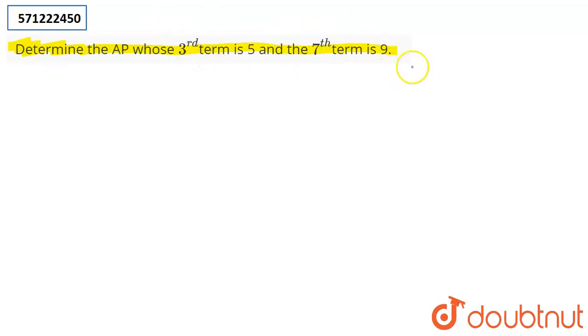In general, an AP looks like a, a+d, a+2d, where a is the first term and d is the common difference.